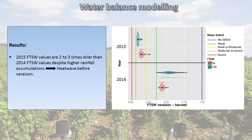Here we have the 2015 values and the 2014 values. The first thing we can see is that the 2015 values are two to three times drier than the 2014 values, despite higher rainfall accumulations. This is linked to a strong heat wave in France last summer in 2015, with temperatures above 35 degrees Celsius for three weeks, which is why we have drier values during the 2015 year.